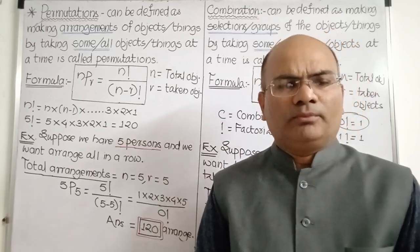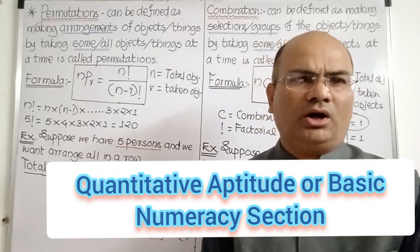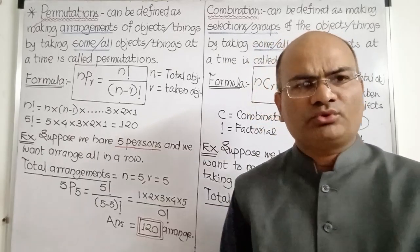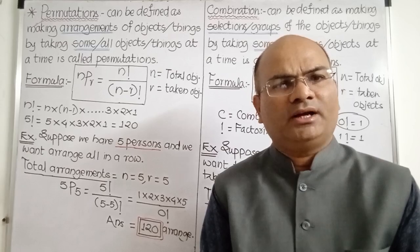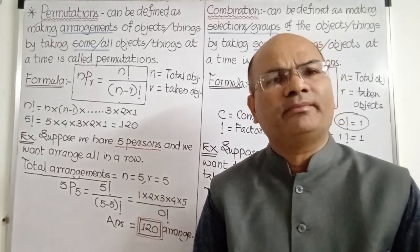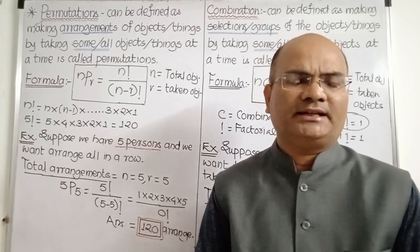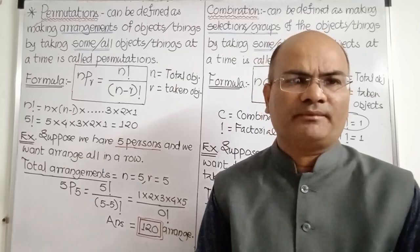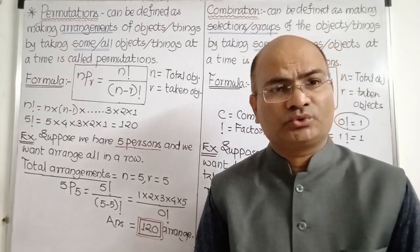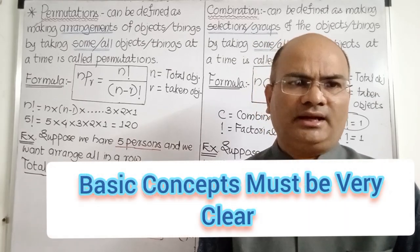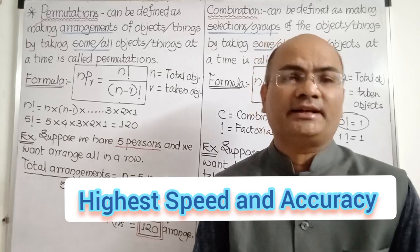This topic is basically from the aptitude or basic numeracy section. Most students are confused about how to apply the formula for permutations and how to apply the formula for combinations, making it difficult to solve examples. This topic is asked in most examinations, so we must deal with every question properly and with highest accuracy. If our basic concepts are very clear, we can solve any example with high speed and accuracy.